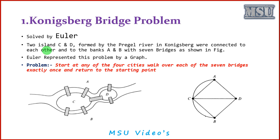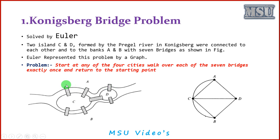The Königsberg bridge problem was solved by the mathematician Euler. Two islands C and D formed by the Pregel river in Königsberg were connected to each other and to the banks A and B with seven bridges. There are two paths from A to C, two paths from B to C, one path from C to D, one from D to A, and one from D to B. The problem is to start from any of the four areas, walk over each of the seven bridges exactly once, and return to the starting point. After representing this as a graph, Euler identified that this problem cannot be solved, and we will discuss the reasons later.